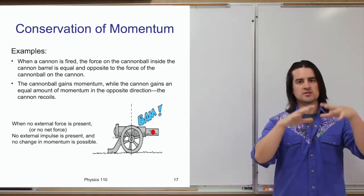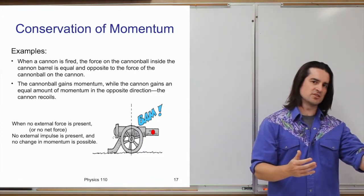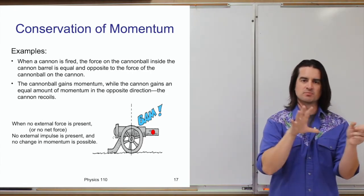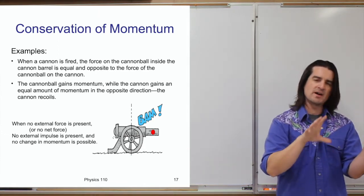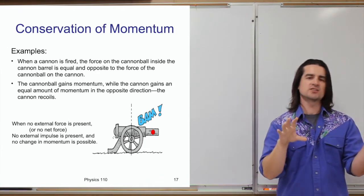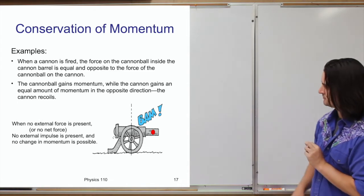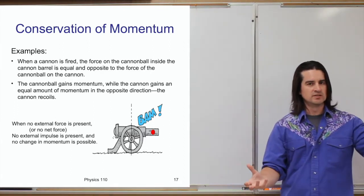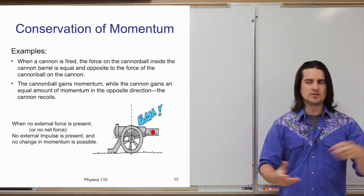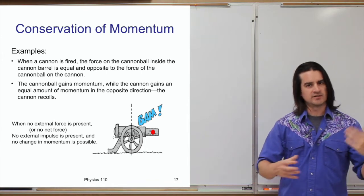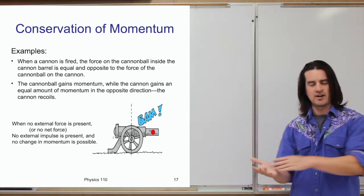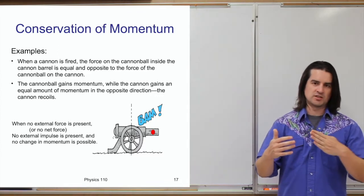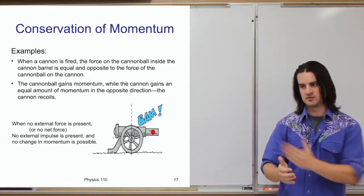So you have the cannonball going one way and the cannon recoiling in the opposite direction. The momentum of the system is conserved overall — the amount going forward equals the amount going backward. The reason the cannon doesn't fly off as fast is because the cannon has much more mass; with a lot more mass, it can have a much smaller velocity and still have the same amount of momentum as the cannonball. And the reason things eventually stop is that there are external forces acting — the cannon drags against the ground or is restrained by ropes — so external forces apply impulses to stop its momentum.